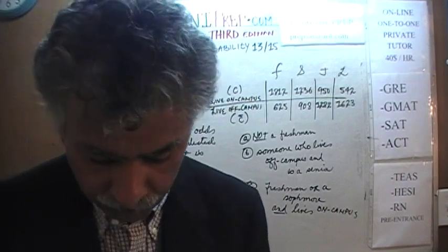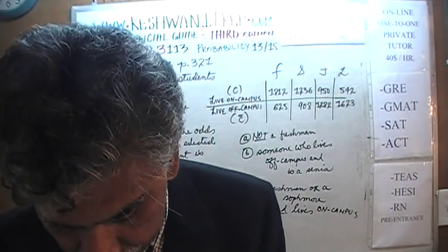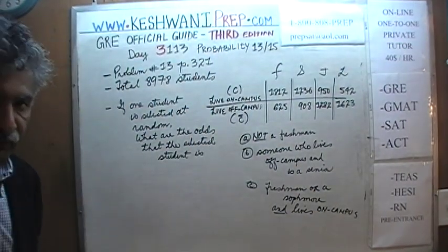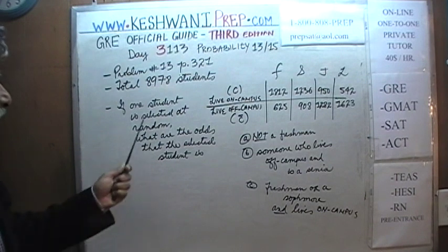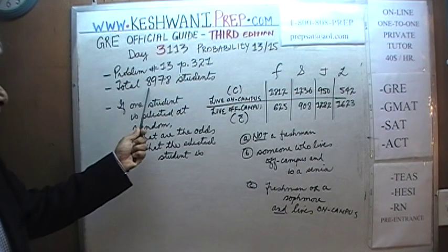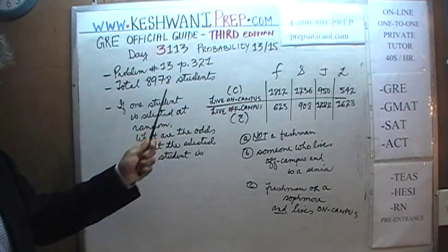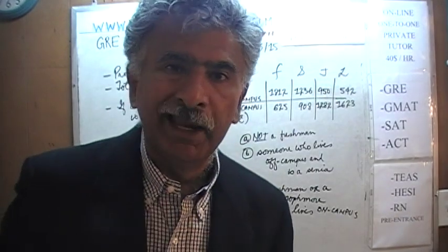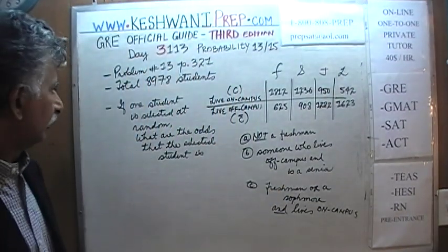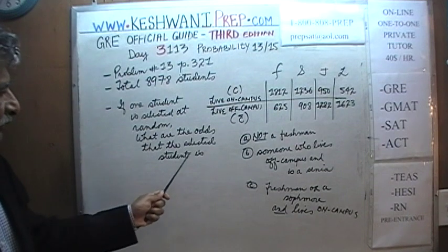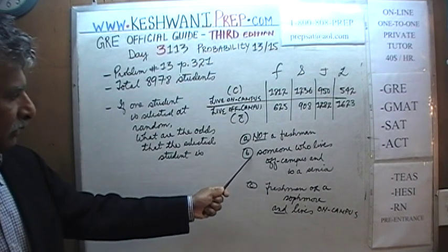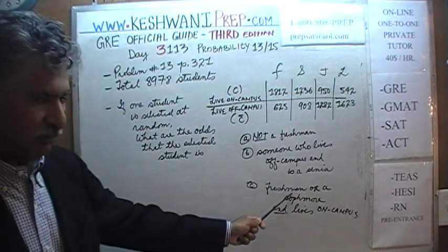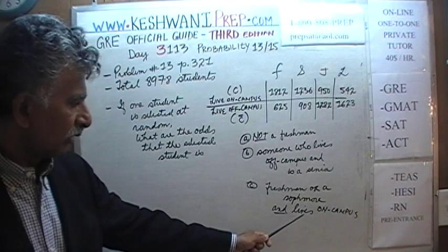Make sure the book is in front of you. Turn to page number 321, problem number 13. Read the problem yourself. I have done as best as I could to put the problem on the blackboard. We are told that we have a total of 8,978 students. From this pool, we are to pick one student at random and answer these questions: what are the odds that the student selected is not a freshman; part B, someone who lives off campus and is a senior; part C, someone who is either a freshman or a sophomore and lives on campus.